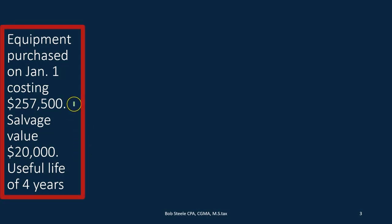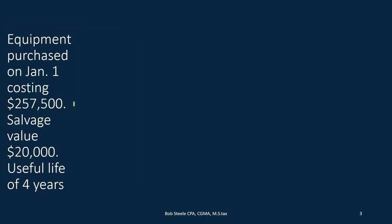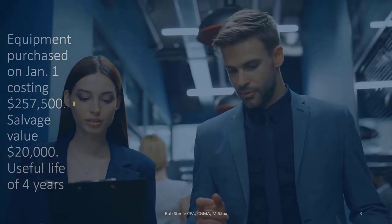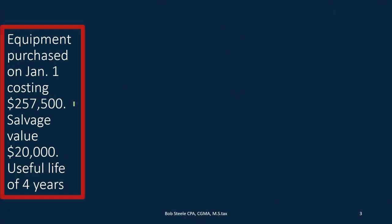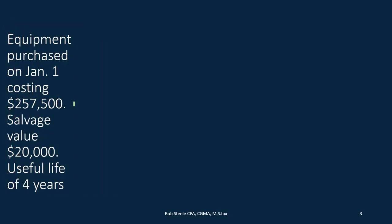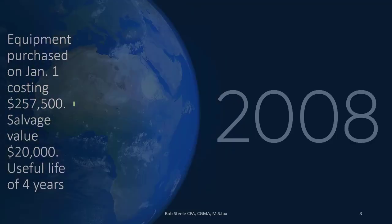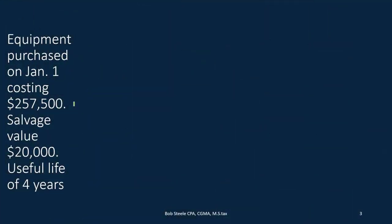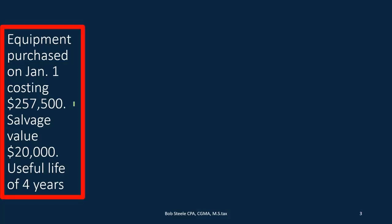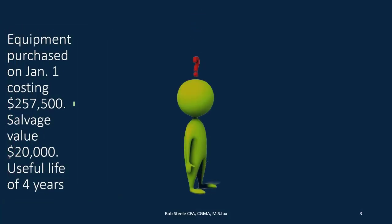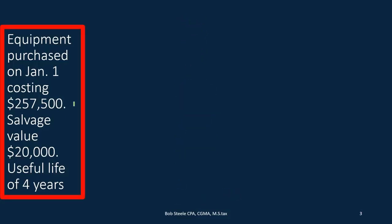The straight-line method allocates depreciation evenly over the useful life, which is the most common-sense approach. However, there is an argument that equipment is more productive in year one than in later years, so we should depreciate more in year one. This is the assumption behind the double declining balance method, which we'll calculate now.